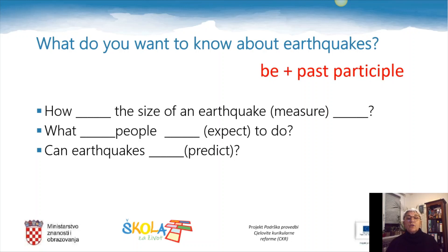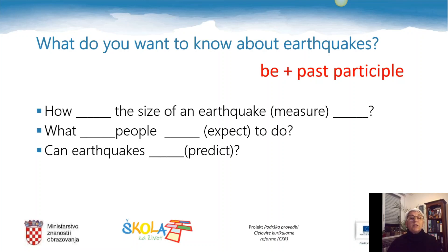Why passive? 'The size of an earthquake [is] measured.' Who measures it? The scientists — we named them on the previous slide. But are we talking about the people who do that activity? No. We are talking about the object — about the earthquake. That's why we need the passive. 'People [are] expected to do.' Passive again. 'Earthquakes [are] predicted.' Are earthquakes predicting anything? No — we are predicting them, so they are the object. You need the passive in all three of these sentences. You can pause this video, copy them into your notebook, and complete the sentences.